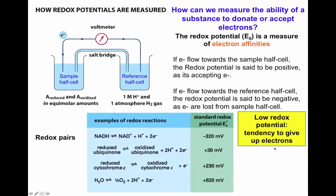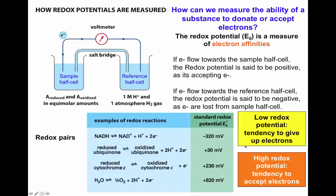Molecules with low — meaning very negative — redox potentials tend to be good electron donors, whereas molecules with high — more positive — redox potentials tend to accept electrons. You always compare two molecules: the one with the more positive standard redox potential will be the electron acceptor, and the one with the more negative standard redox potential will be the electron donor.